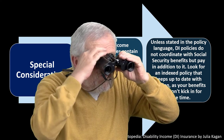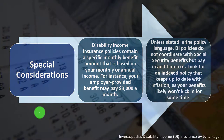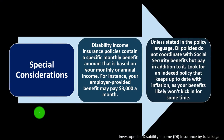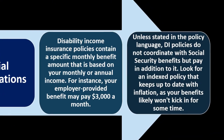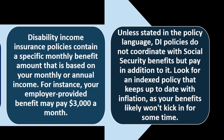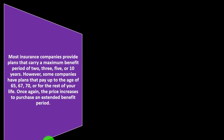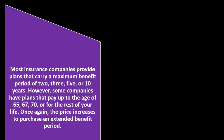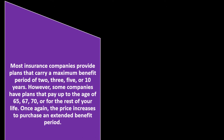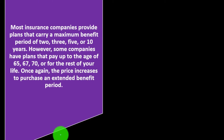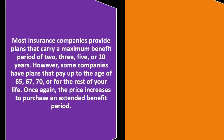When looking at the benefits they're going to be paying out, consider whether the amount will be indexed or increased with inflation — that's becoming a bigger factor now. Most insurance companies provide plans with a maximum benefit period of 2, 3, 5, or 10 years. However, some companies have plans that pay up to age 65, 67, 70, or for the rest of your life. The price increases to purchase an extended benefit period.